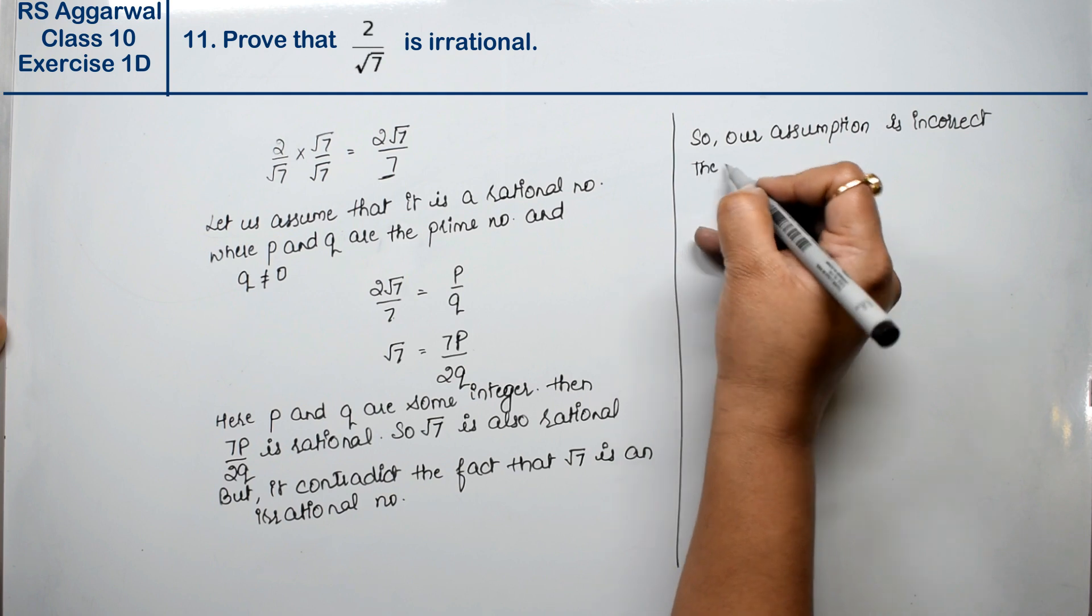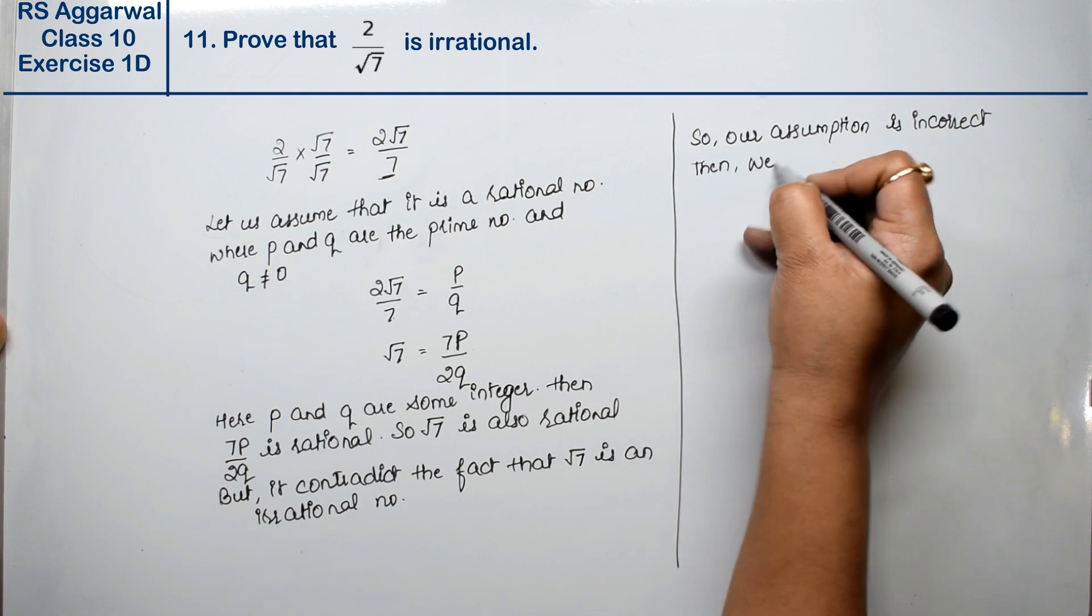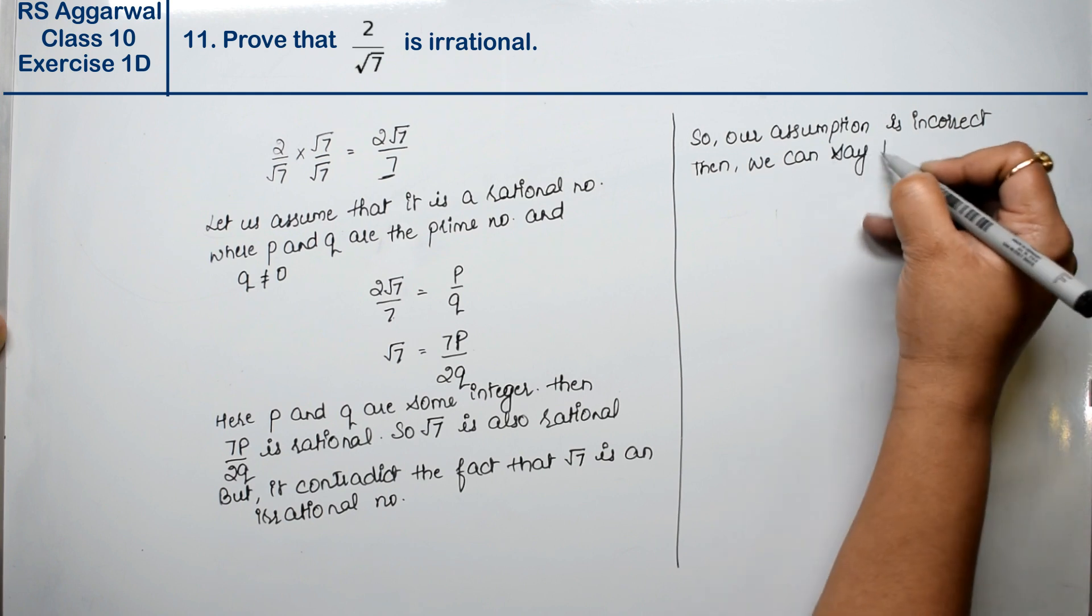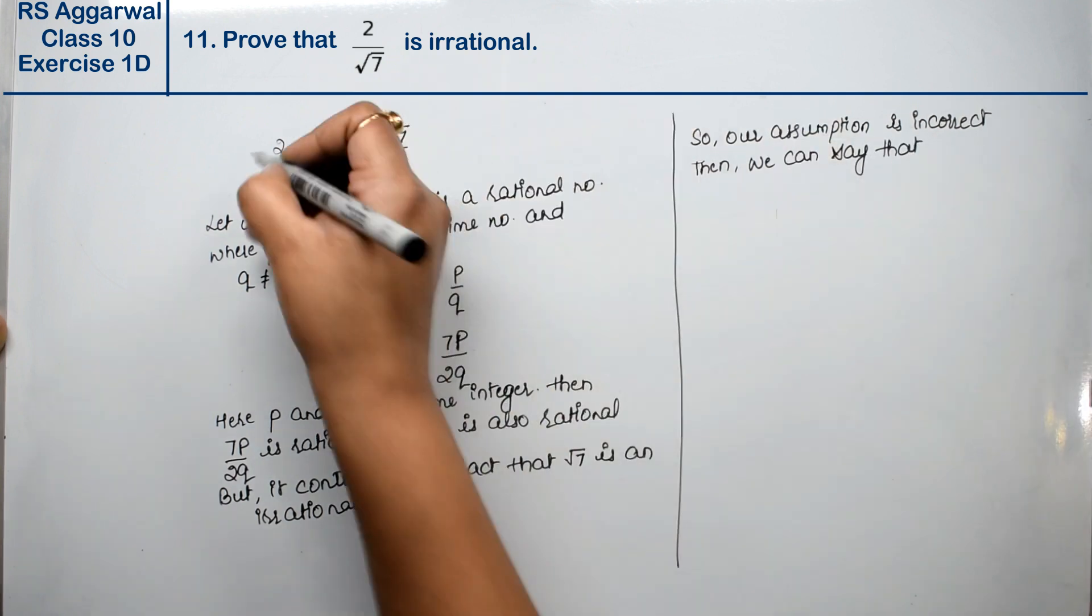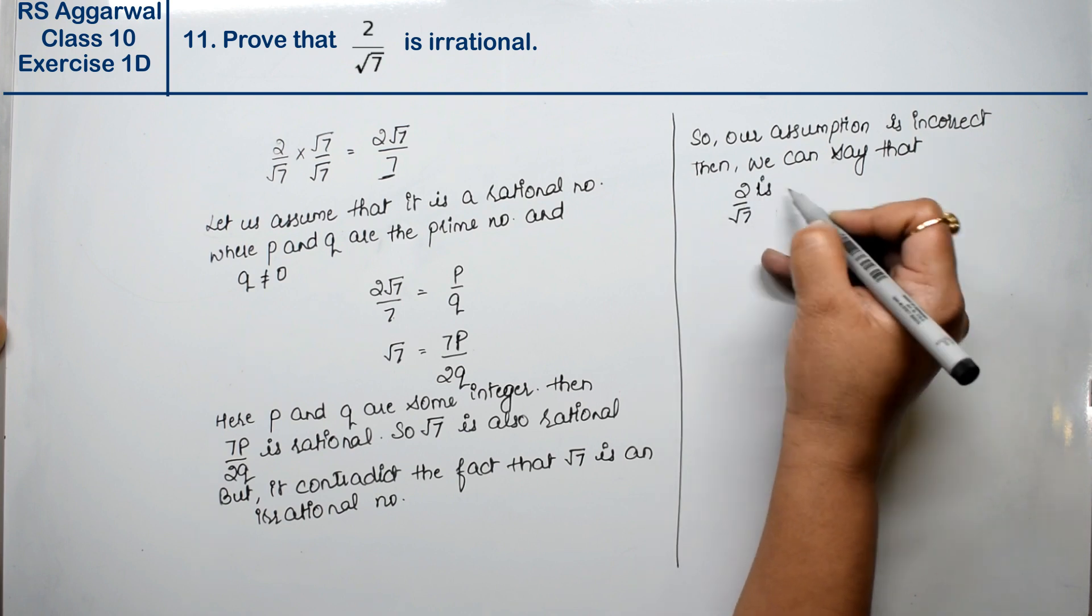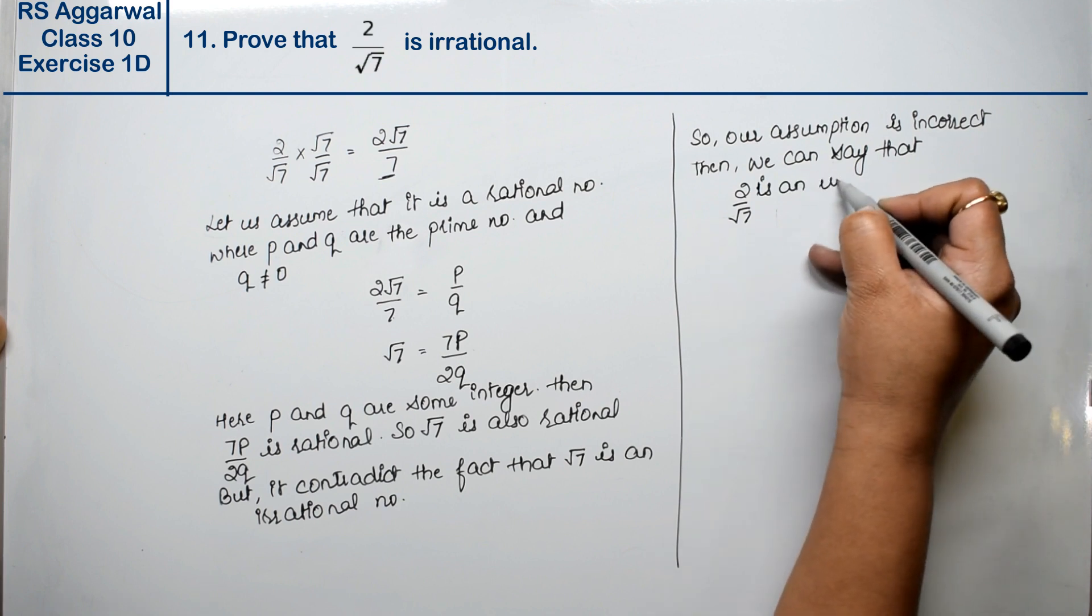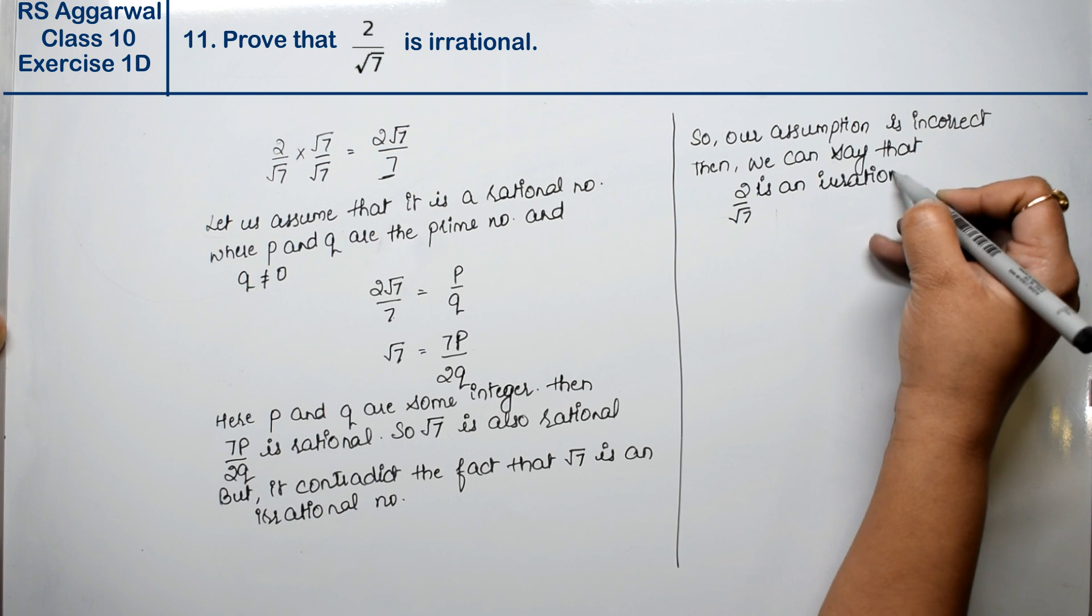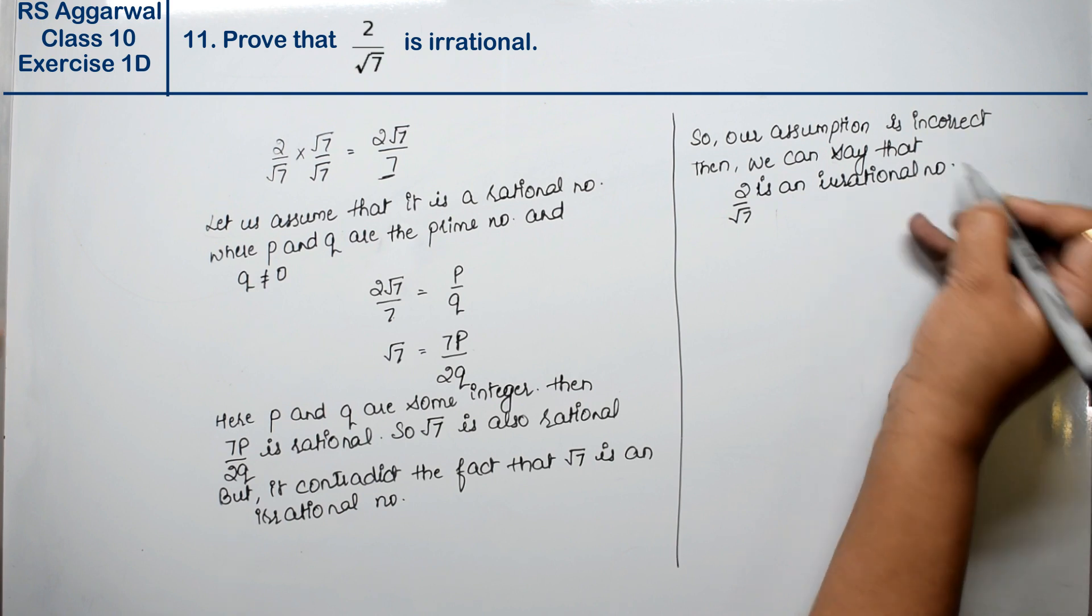Then we can say that 2 upon root 7 is an irrational number.